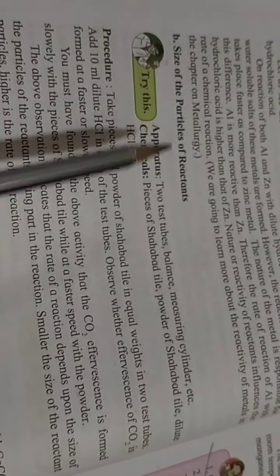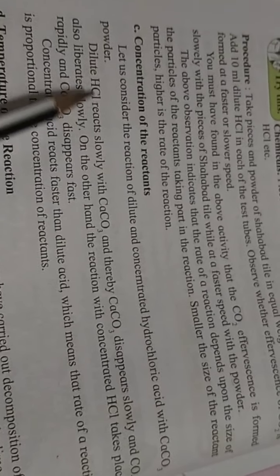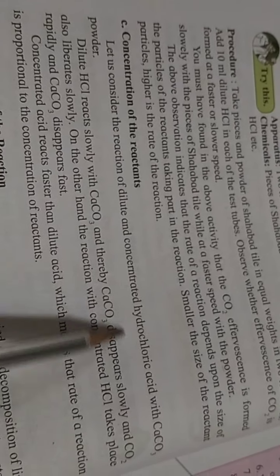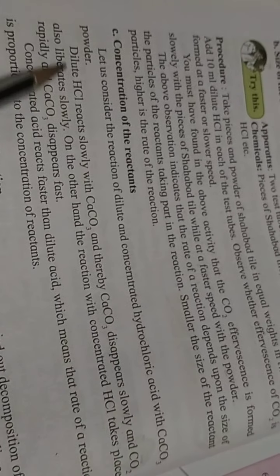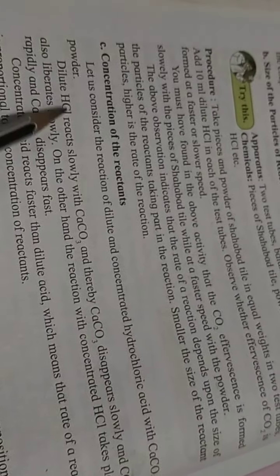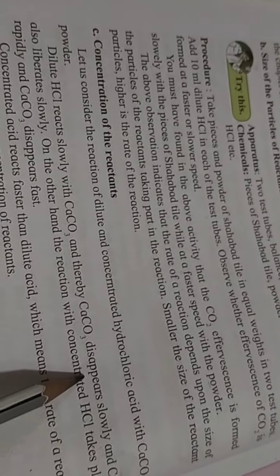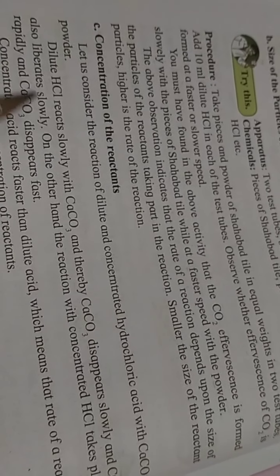Next, we are going to see the concentration of the reactant. Dilute hydrochloric acid with CaCO3 powder. Dilute hydrochloric acid reacts slowly with CaCO3 and thereby CaCO3 disappears slowly and CO2 also liberates slowly.